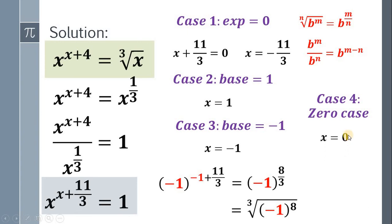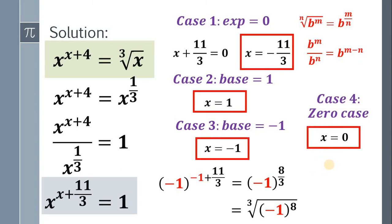Therefore, x equals 0 is a valid solution. So we have 4 solutions: x equals negative 11 over 3, x equals 1, x equals negative 1, and x equals 0. And we're done.